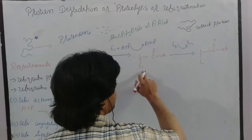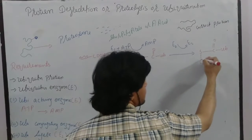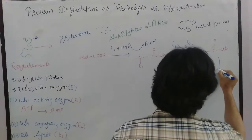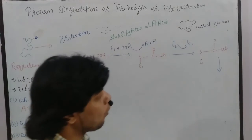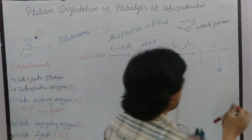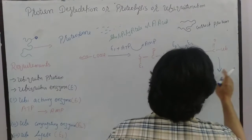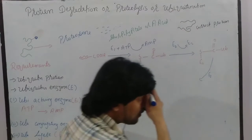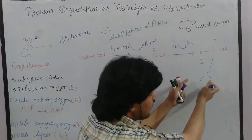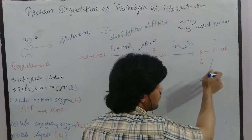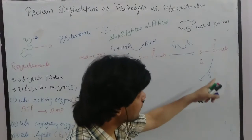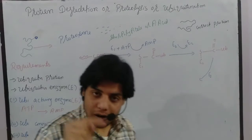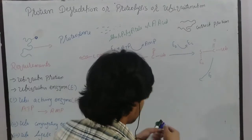E2 replaces E1 at the ubiquitin, and the ubiquitin binds to E2 at the cysteine residues. After that, ubiquitin reacts with E3. The ubiquitin — now carrying E2 — will bind to E3, and then E3 brings this ubiquitin to the misfolded or non-functional protein.